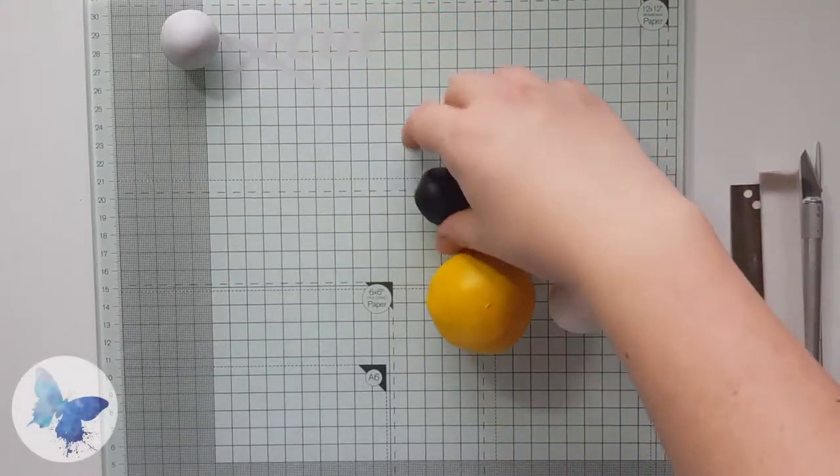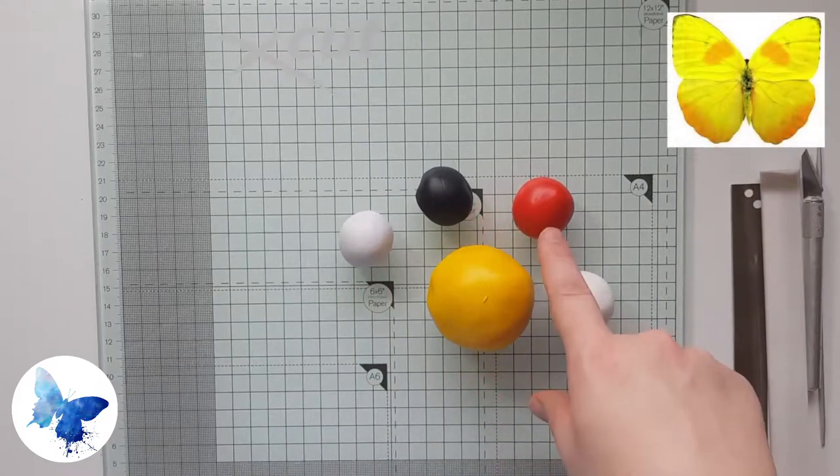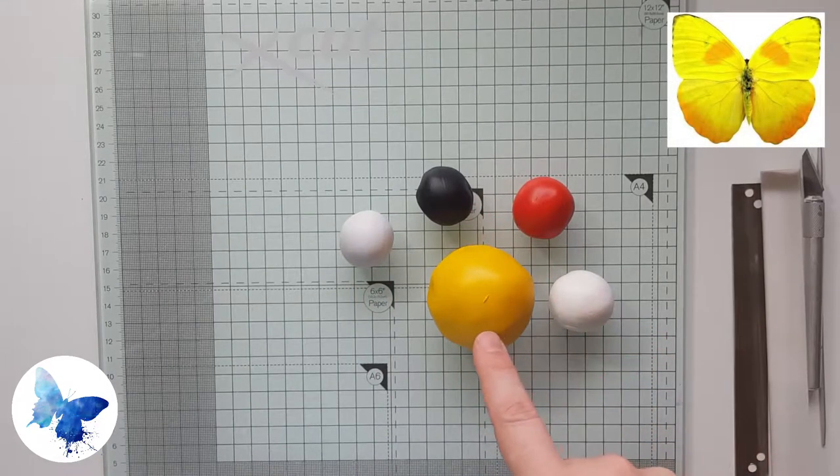For this tutorial I am using Primo Sculpey in a very pale grey, a black, cadmium red, white, and a large amount of yellow.